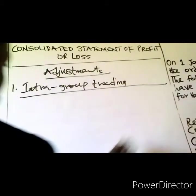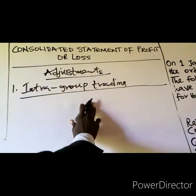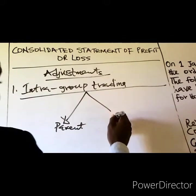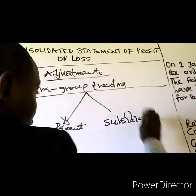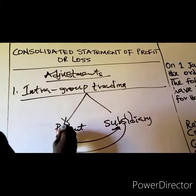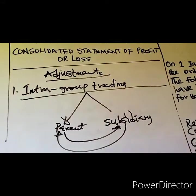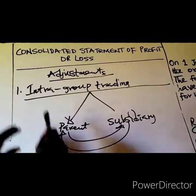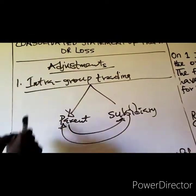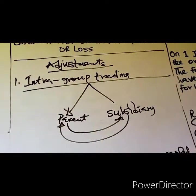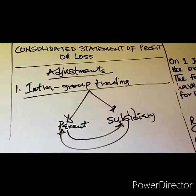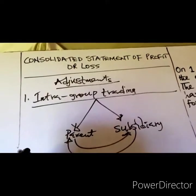Intra-group trading is where there are sales between the members of the group — between the parent and the subsidiary. The consolidated financial statement will only contain items between non-group members; transactions between members of the group will be eliminated.